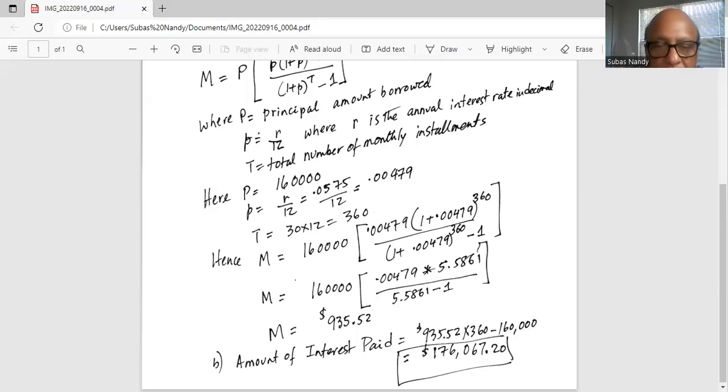If we crunch out the numbers correctly, the monthly mortgage payment is $935.52.